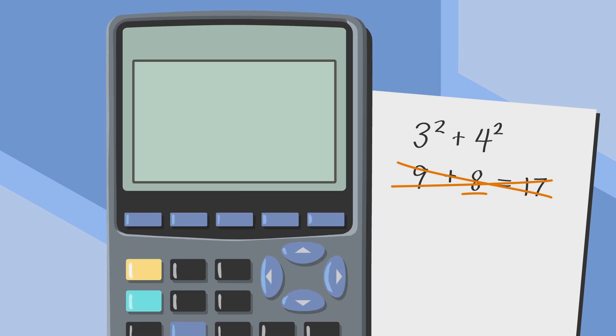By using a calculator, we can quickly add 3 squared, which is 9, plus 4 squared, 16, for an answer of 25.